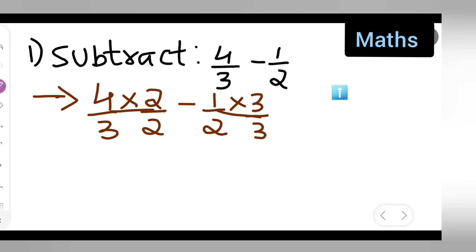4 upon 3 multiplied with the denominator of this, 4 upon 3 multiplied with 2, minus 1 upon 2 multiplied with this denominator. It's like cross multiplication you're doing. Now this is equal to what?